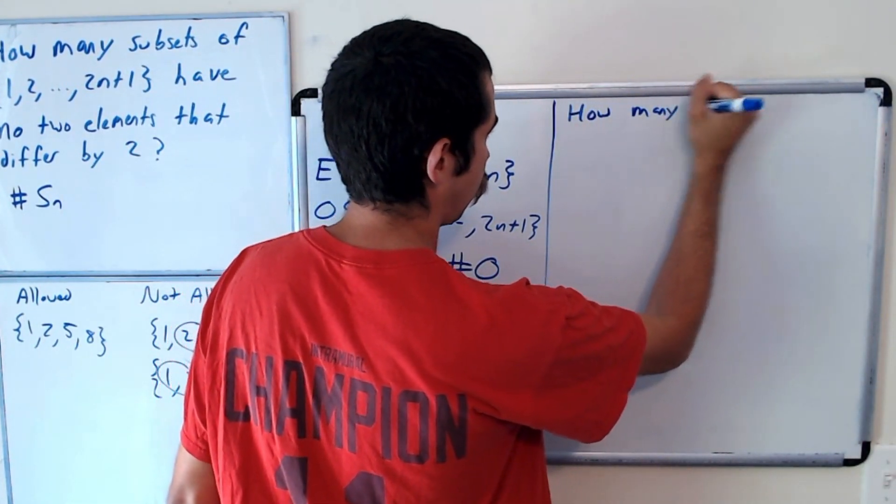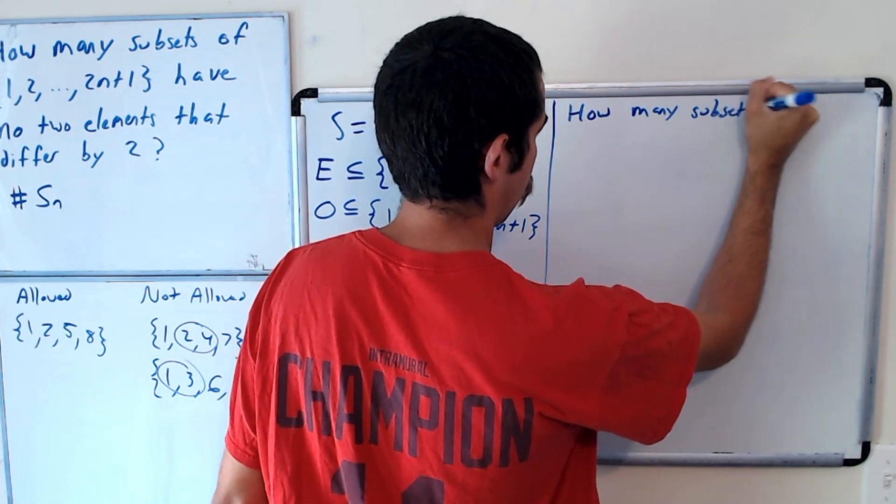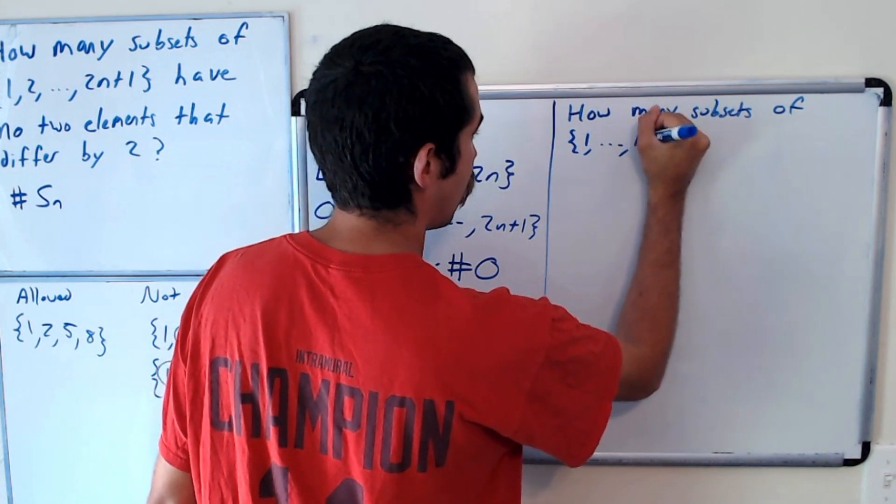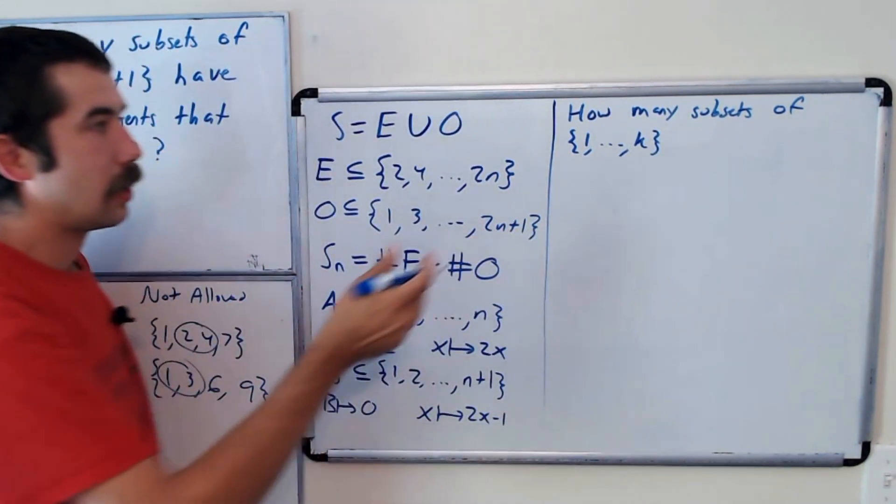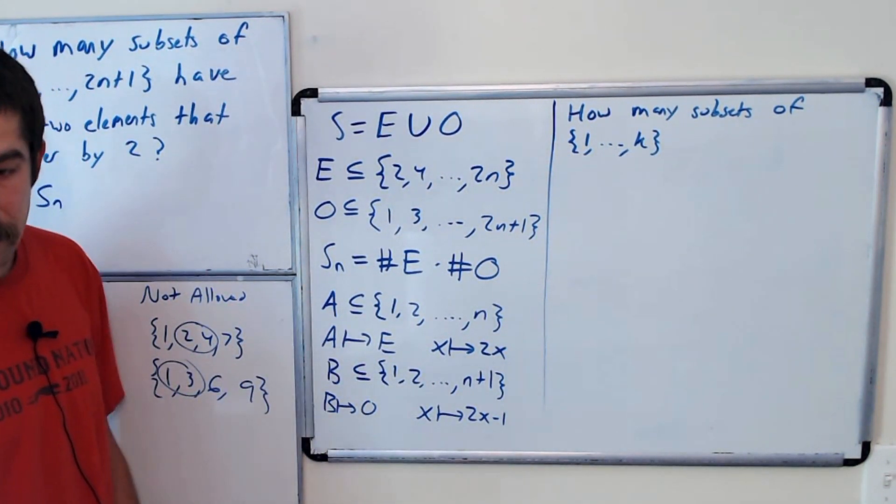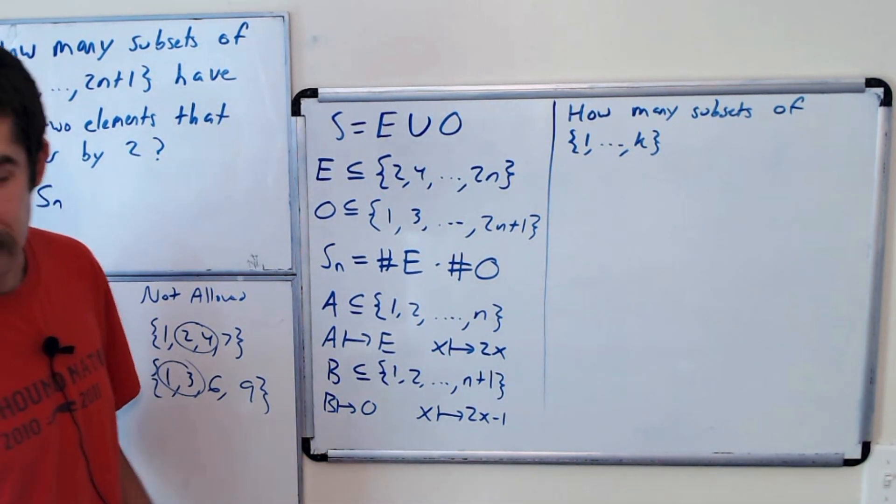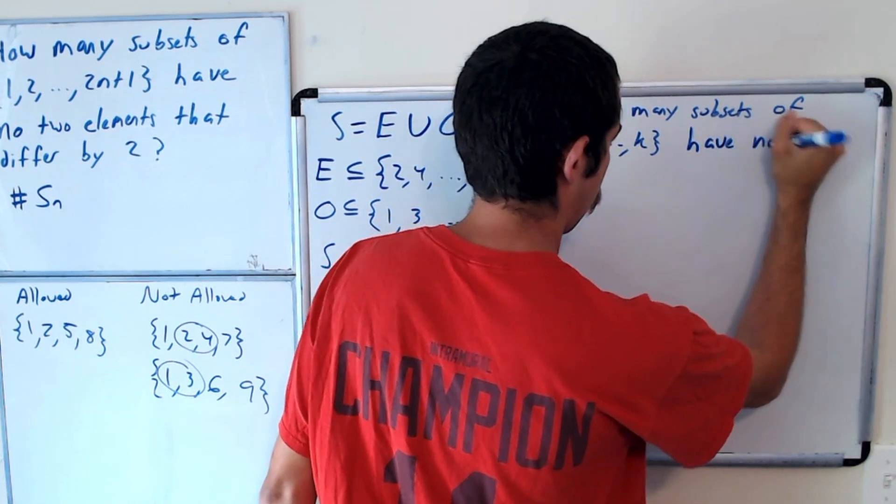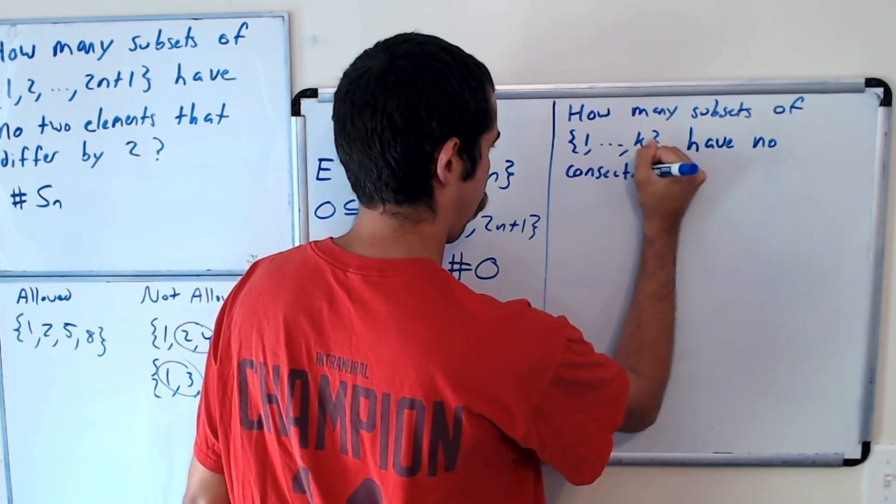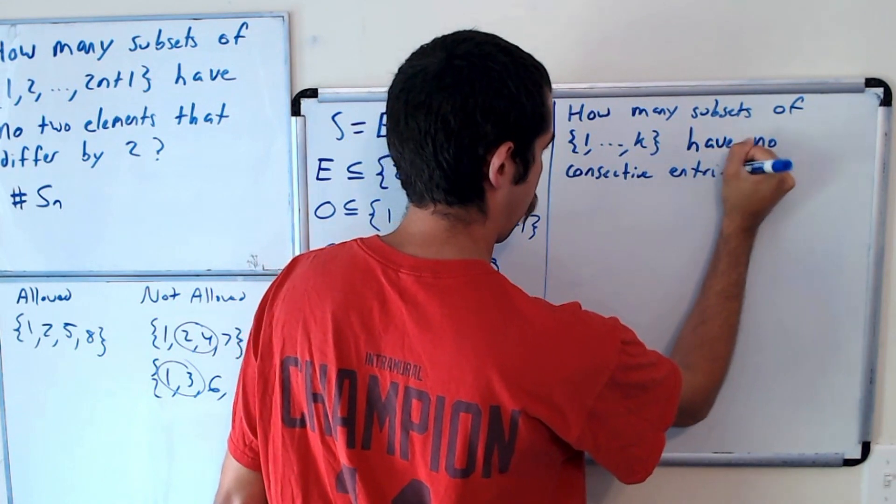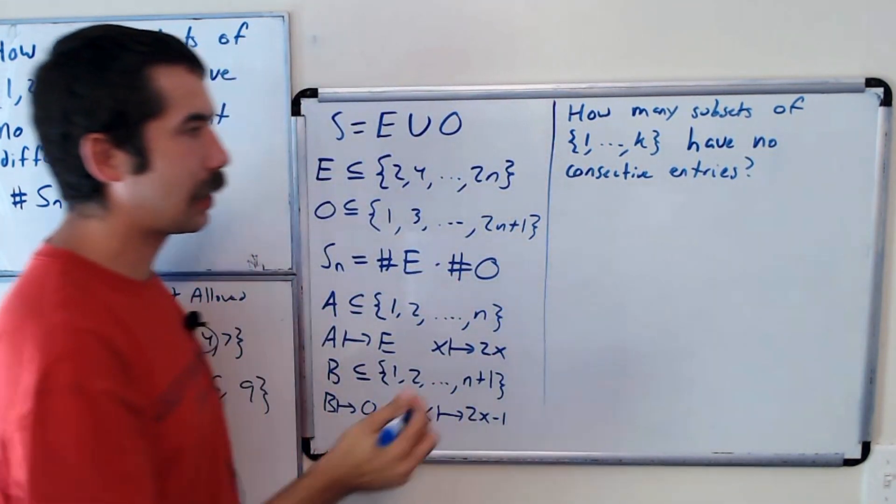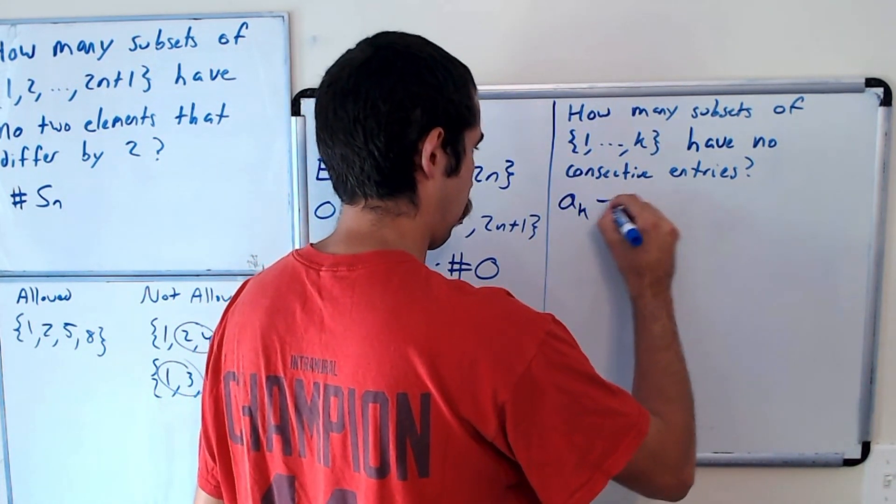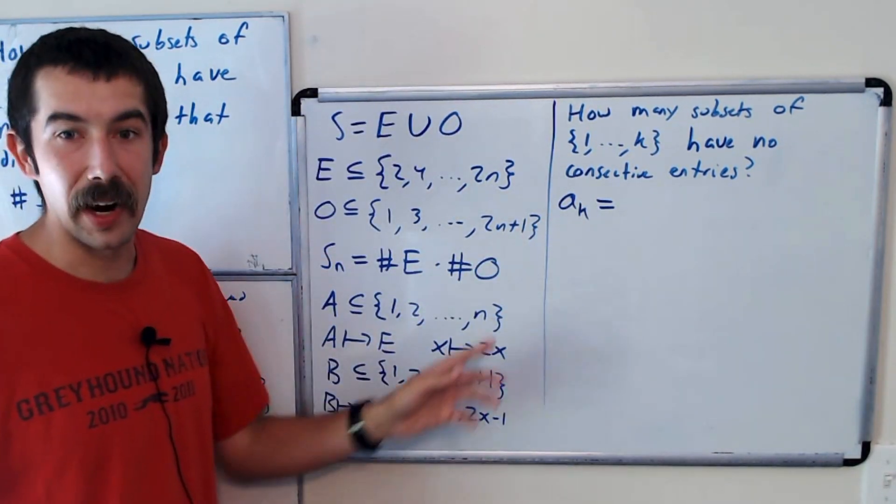How many subsets of 1 through K, and then we'll set K equals N or N plus 1. So how many subsets of 1 through K do not have consecutive entries? And we'll let this number be A sub K.